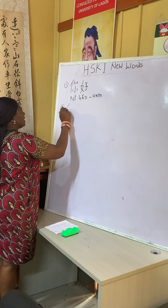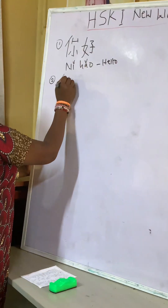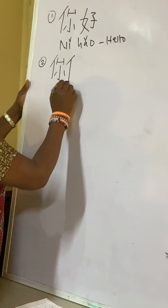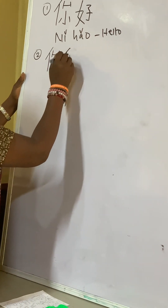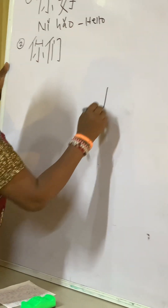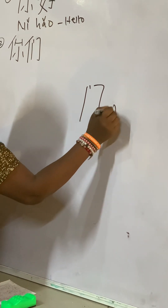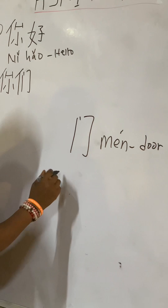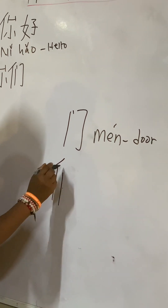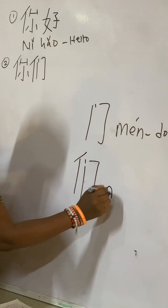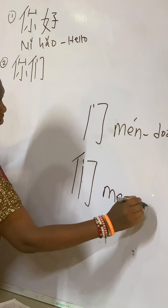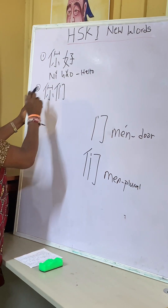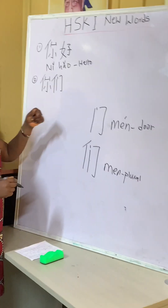For 你们 (nǐmen): 你 (nǐ) is kumaradika with 小 (shall). Then 们 (men) — it is also kumaradika with this character. 们 (men) means plural, like 's' in English, like boys. So 你 (nǐ) means you singular, and 你们 (nǐmen) means you plural.